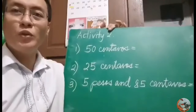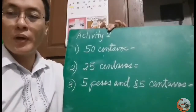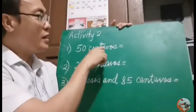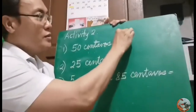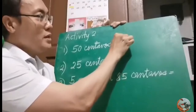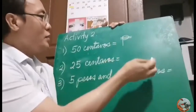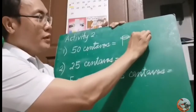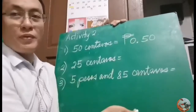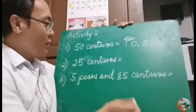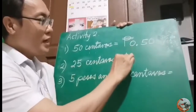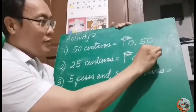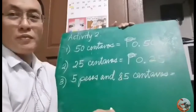Activity 2.2 is all about writing each amount using the peso sign. How do we write 50 centavos using the peso sign? Write the peso sign — P with two lines — and then 0.50. And it is read as 50 centavos. For 25 centavos: peso sign, then 0.25. And that is 25 centavos.